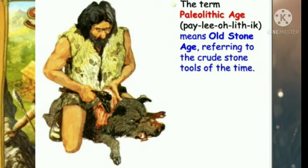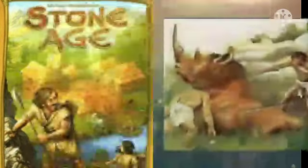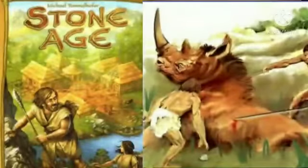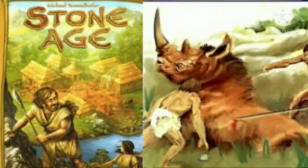The Paleolithic Age comes from two Greek words: paleo meaning old, and lithos meaning stone. This period extended from two million years ago to about twelve thousand years ago. This period is called the Old Stone Age.